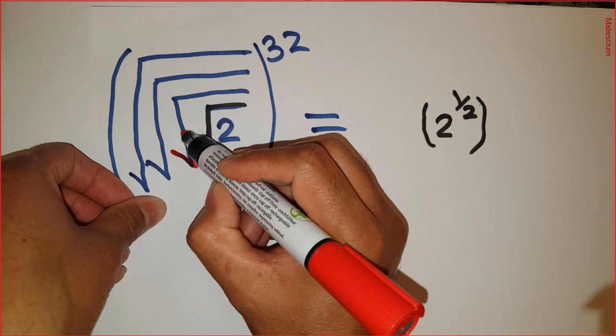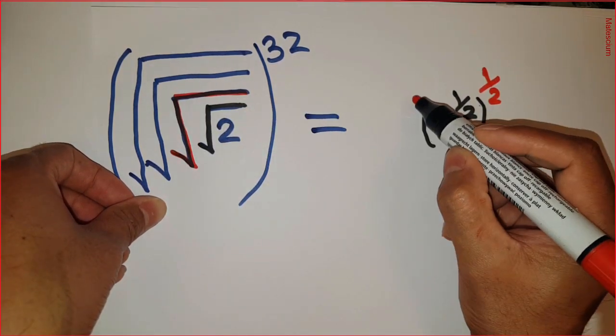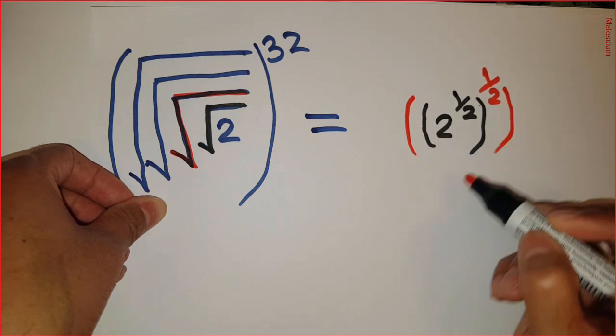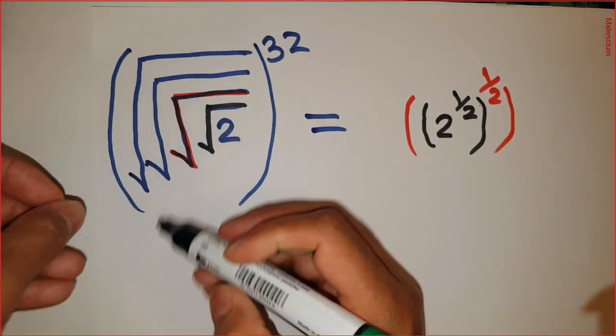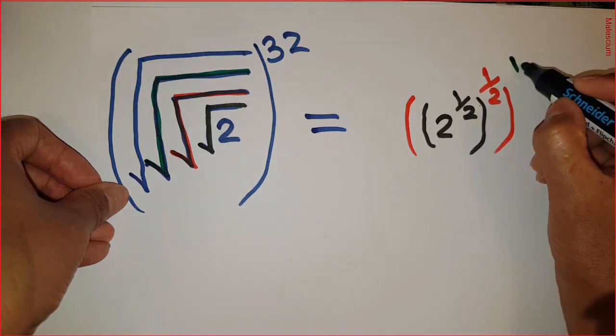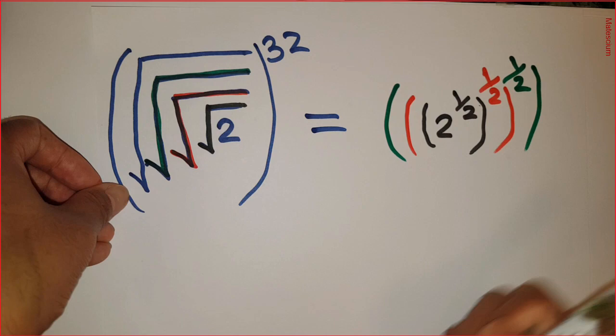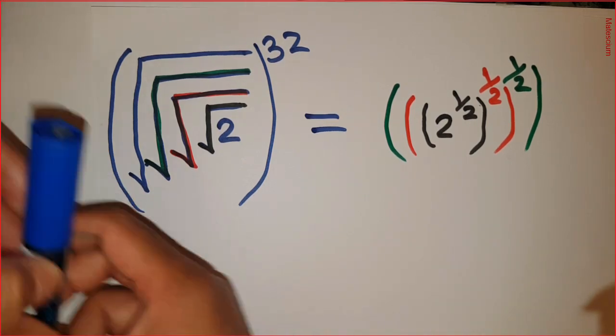And this square root means again power of half. That also covered by this bracket. And this square root means another half here. That's also covered by this bracket.